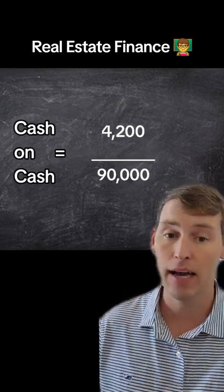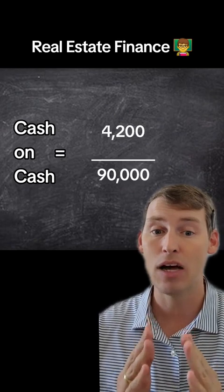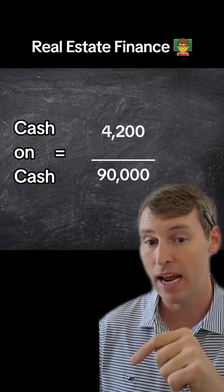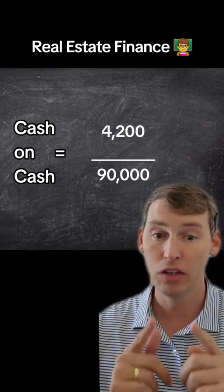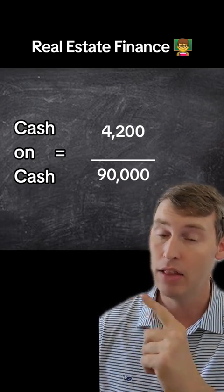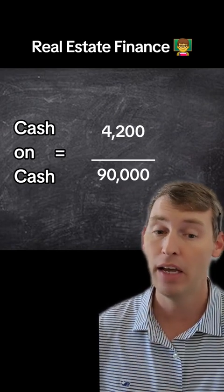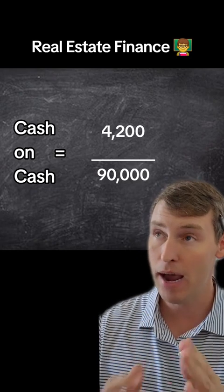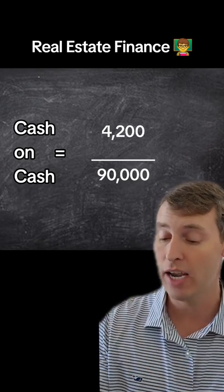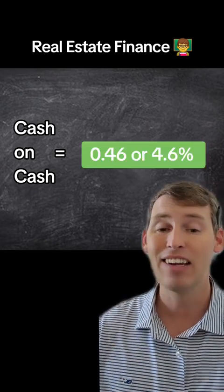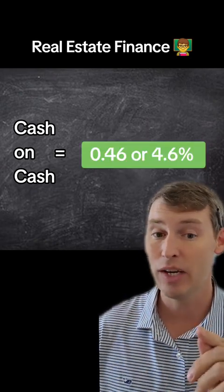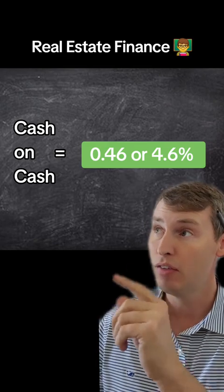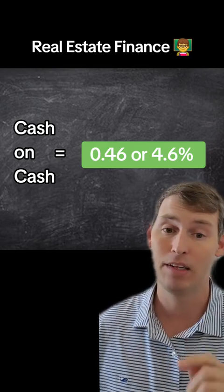Now we divide that $4,200 by the $90,000 we put down as a down payment for our initial investment in this rental property. If we do the math on our cash on cash return, that comes out to 4.6%.